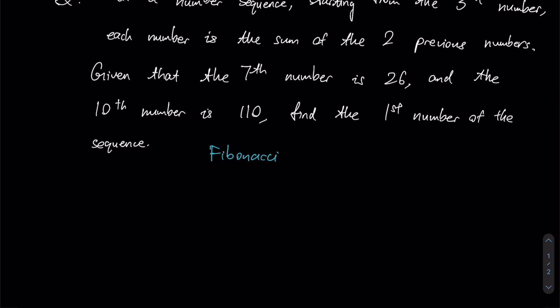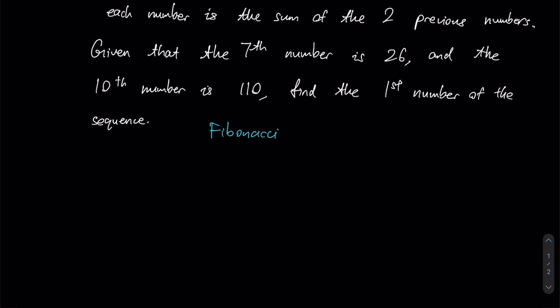We should have 10 blanks in total: 1, 2, 3, 4, 5, 6, 7, 8, 9, 10. So the seventh one is 26 as given, and the tenth one here is 110.